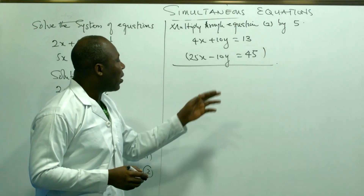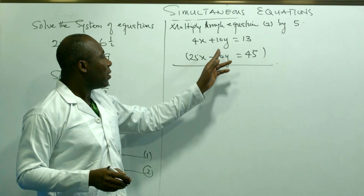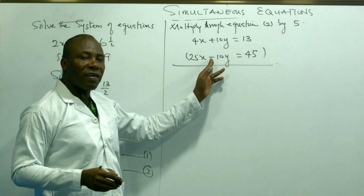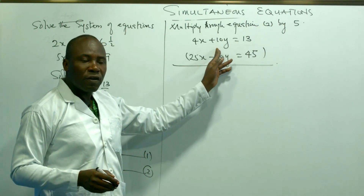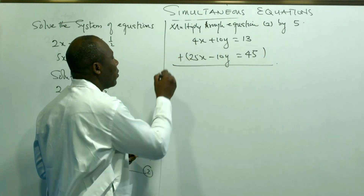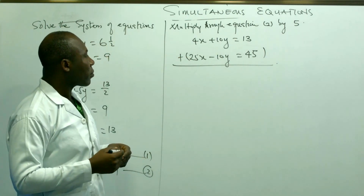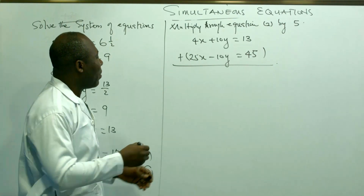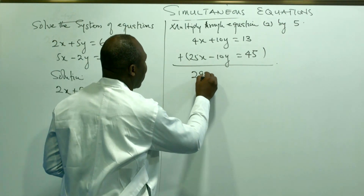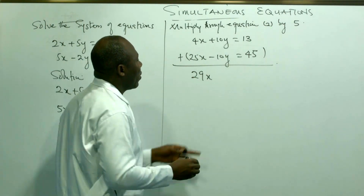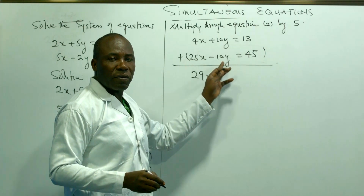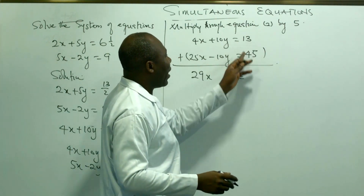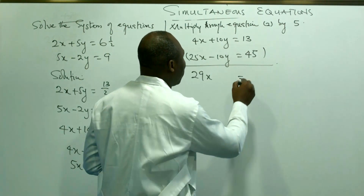Now let's look at the y coefficients. They are both 10, but one is negative and the other is positive, so I am going to add the two equations. When I add the x terms, I get 29x. When I add the y terms, I get 0 — the y is eliminated. When I add the right-hand sides, I get 58.